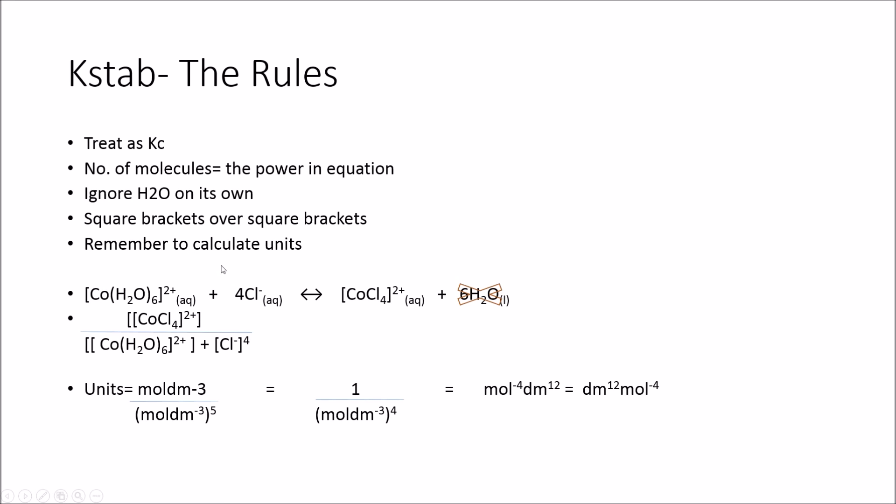And the last thing is just remember to calculate the units. You probably know this because it's emphasized a lot when you're doing Kc. But make sure, as it's a constant, it's going to have different units every time. So in this case, we can see that we have our concentration and a concentration. So our overall order on the bottom is 5 because we've got 4 plus 1 here. And we just have 1 on the top. So then if you follow these steps, and you might know them already, you end up with dm to the 12 mol per mol to the -4.